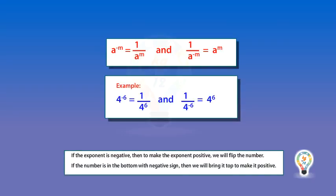Next, if the exponent is negative, then to make the exponent positive we flip the number. And if the number is in the bottom with a negative sign, then we bring it to the top to make it positive.